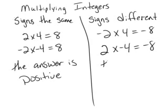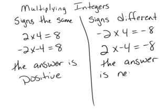So if the signs are different, the answer is negative. And that's all there is to multiplying integers.